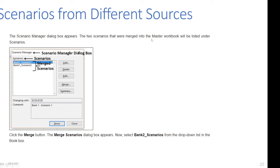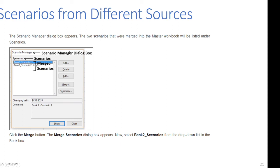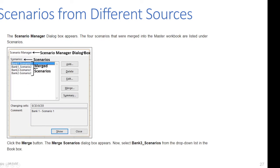Click the Merge button again. The Merge Scenarios dialog box appears. Select 'Bank Two Scenarios' from the drop-down list in the Book box. The Bank Two sheet is displayed at the bottom, and the number of scenarios found on the source sheet is shown — there are two scenarios. Click OK. The Scenario Manager dialog box appears again with four scenarios now listed: two from Bank One and two from Bank Two.